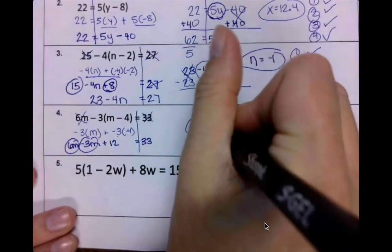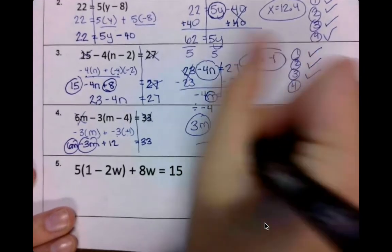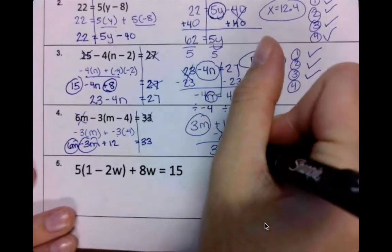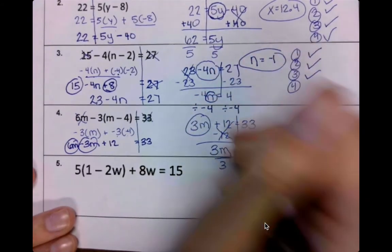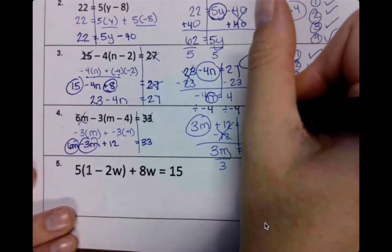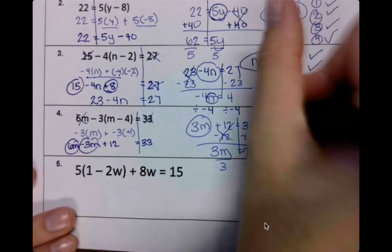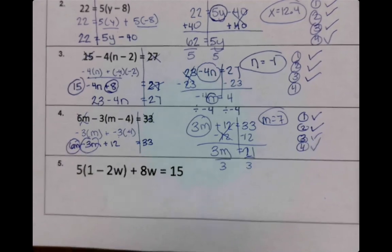Solve for m. You should have subtracted 12 on both sides, and then divided by 3. So m equals 7. That's what you should have gotten. All right, awesome job.